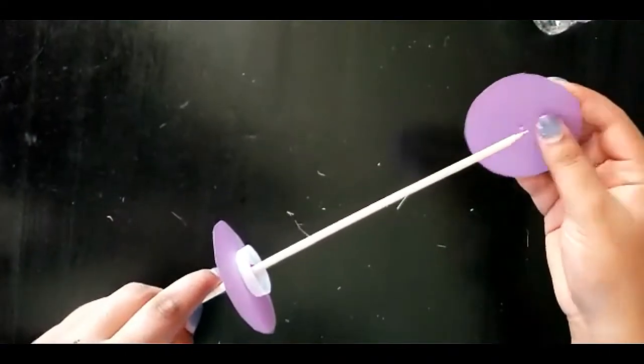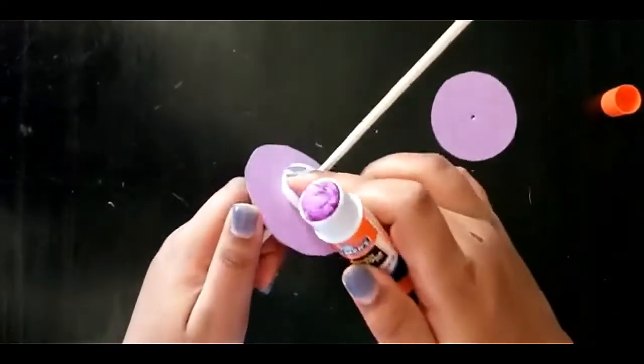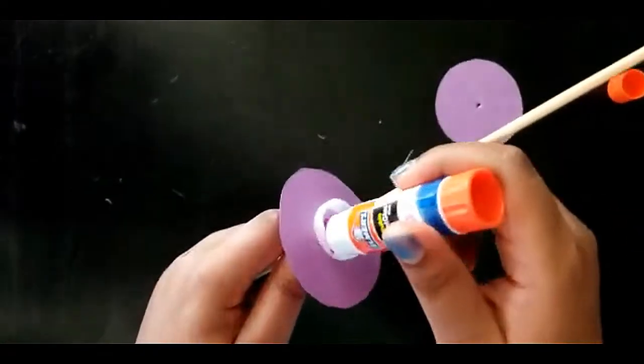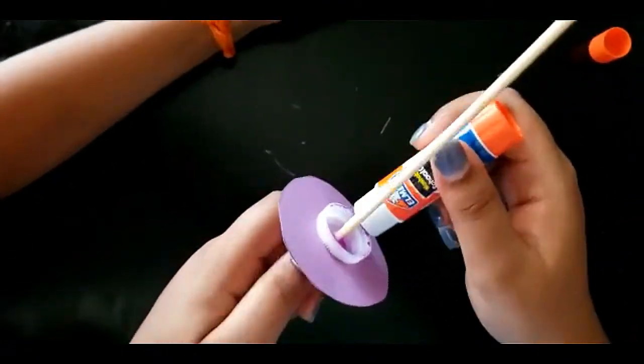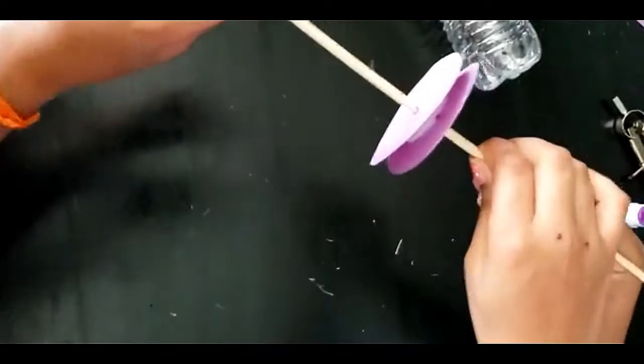And push the other circle through too, after putting some glue on the edge of the bottle cap. Center it.